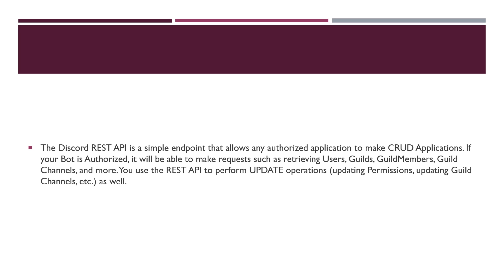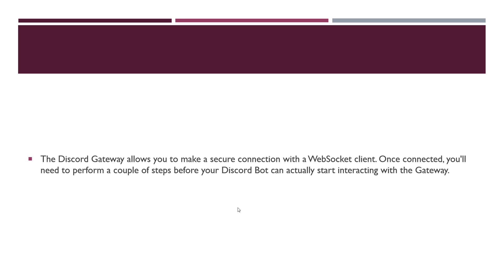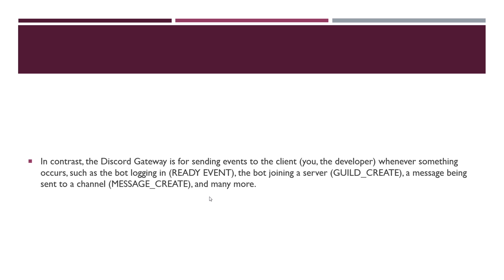For example, if you wanted to update permissions on a guild member, you would hit some endpoint on the REST API. The Discord Gateway allows you to make a secure connection with a WebSocket client, and once connected, you need to perform a couple of steps before your bot can start forming bi-directional communication between your application and the gateway. The gateway mainly sends events to the client — for example, when the bot logs in successfully, a ready event is fired; when the bot joins a server, a guild create event is emitted; and when a message is sent to a channel, a message create event is emitted.